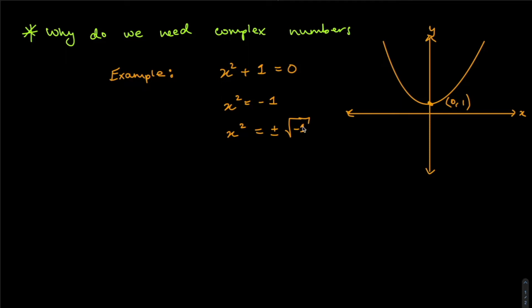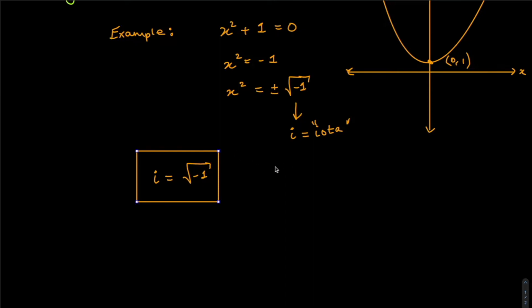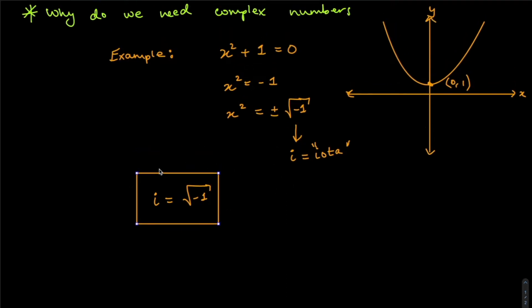If you want to satisfy this condition, the only way is by the use of complex numbers. There's a special way we denote this value: the square root of negative one is always denoted by something called i, or iota. So i = √(−1). This is the basis of complex numbers — this is where imaginary numbers come from.